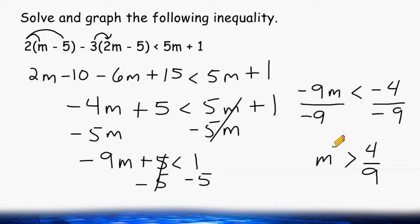Now that we have m isolated all by itself with no negative in front of it, we have a positive 1m. We have found our solution, which is m could be any value that we wish as long as it is greater than positive 4 ninths.